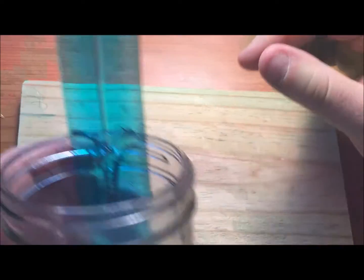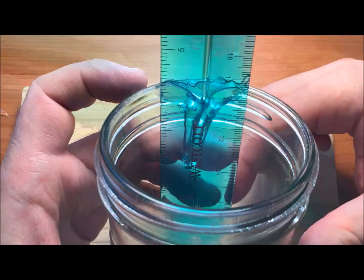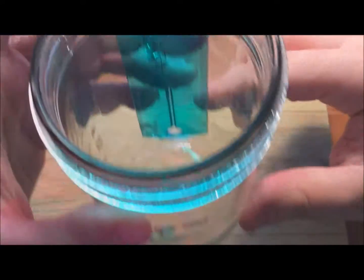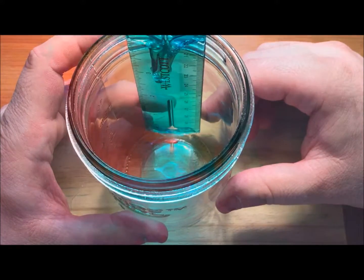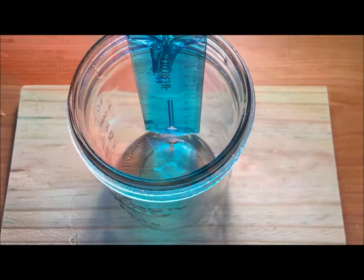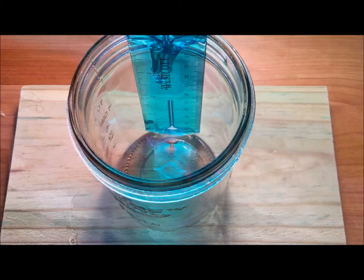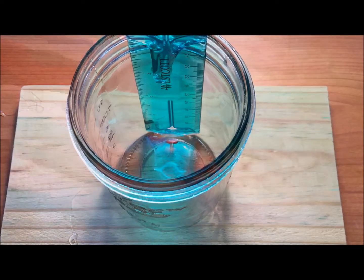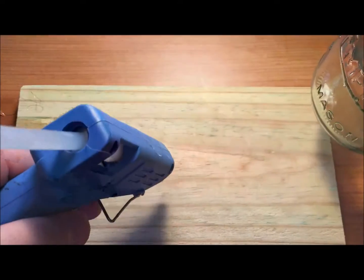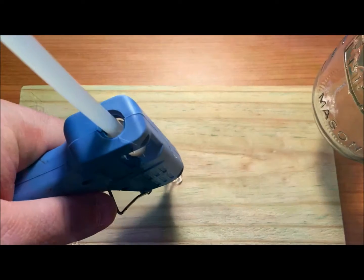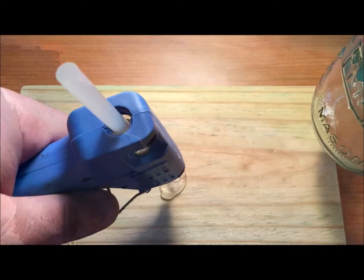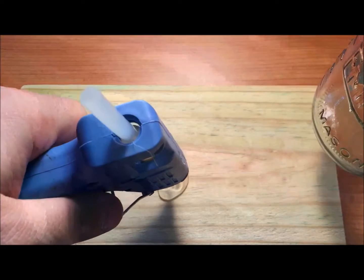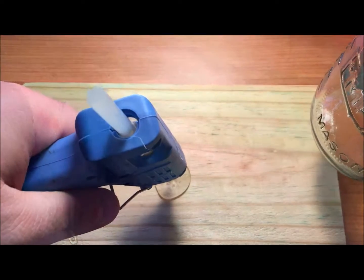The last piece now is to take my ruler, which is affixed to my mason jar, and attach both of those to the wood so that when I set this up outside, it won't blow away. I'm going to make a nice big puddle of hot glue on my board.